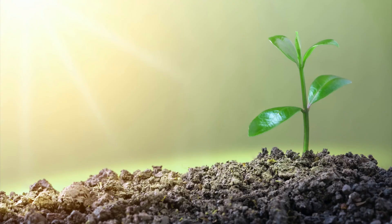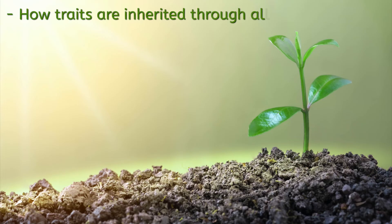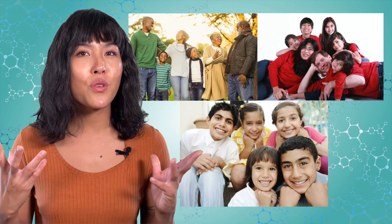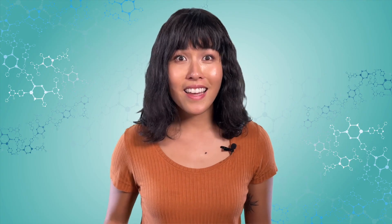I've thrown a lot at you today. Let's stop there and recap what we've learned. We looked at how traits are inherited through alleles, saw the difference between dominant and recessive alleles, and learned that DNA is organized into chromosomes. See if you can identify other traits that you think might be genetic — look at your parents and maybe other family members to find a trait you have in common. Our genes make us who we are, and your genes came from your parents. Until next time, remember: biology isn't just science, it's the way of life.